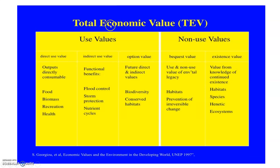There is another table showing total economic values with examples. Use values include direct use value — examples are food, biomass, recreation, and health. Under indirect use value we have flood control, storm protection, and nutrient cycles. Under option value we have biodiversity and conserved habitats for future generations. Under bequest value we have use and non-use value of environmental goods and habitats, and prevention of irreversible change. Under existence value we have value from knowledge of continued existence, which may include habitat, species, genetic ecosystems, and so on.